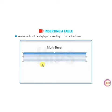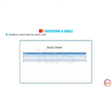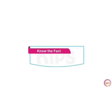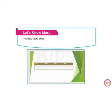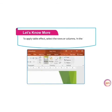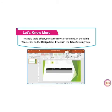A new table will be displayed according to the defined rows and columns. Place the mouse pointer in the first cell of the table and type a heading, then press the Tab key. Similarly, insert data for other cells using the Tab and arrow keys or by clicking in the required cell. The intersection of a row and column in a table is called a cell. To apply a table effect, select the rows or columns in the table, click on the Design tab, then select Effects in the Table Style group.